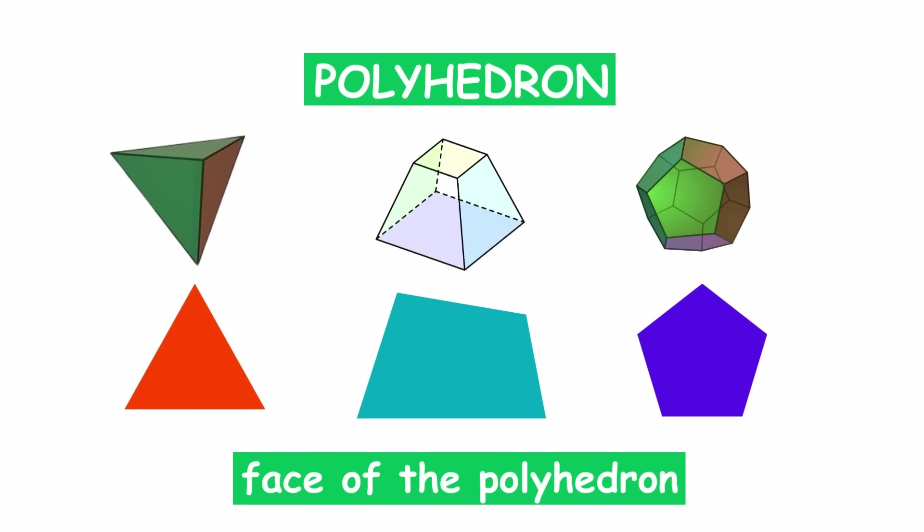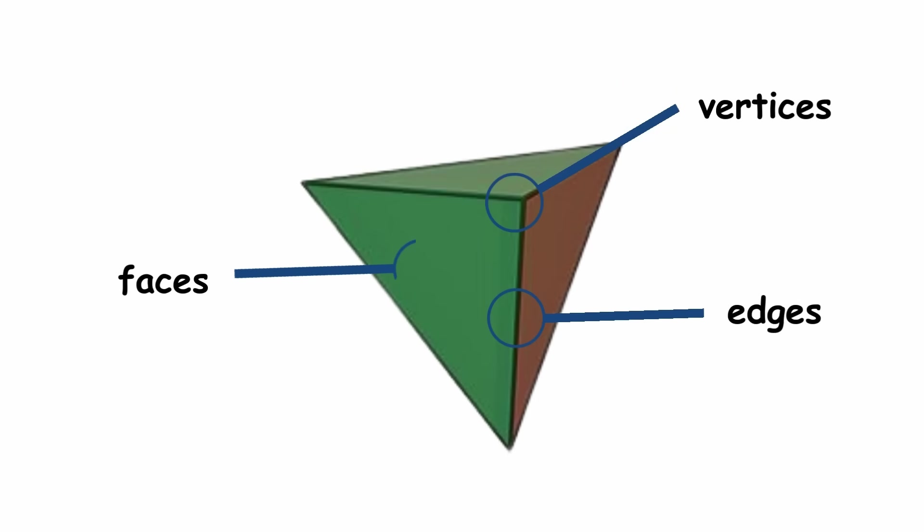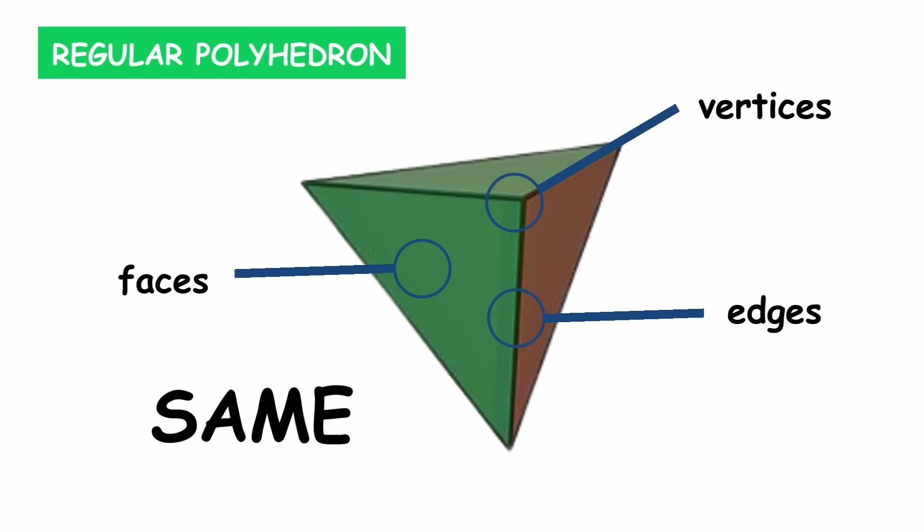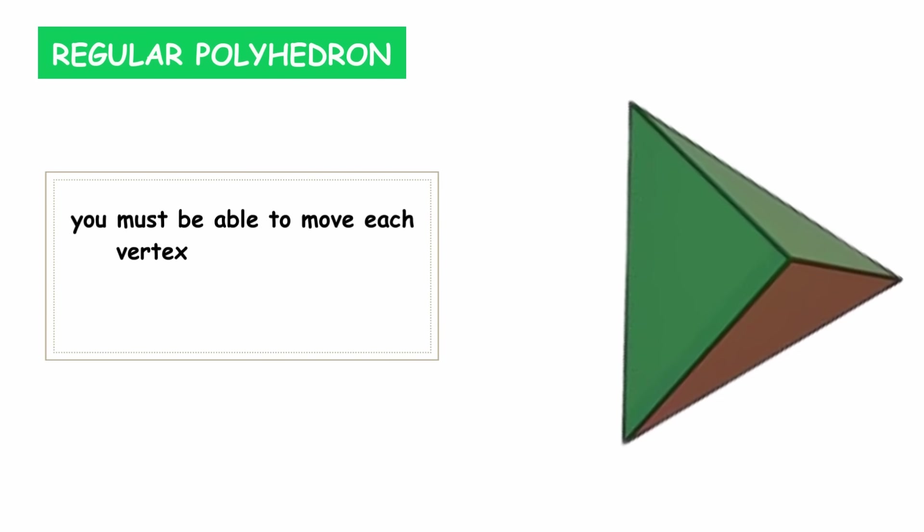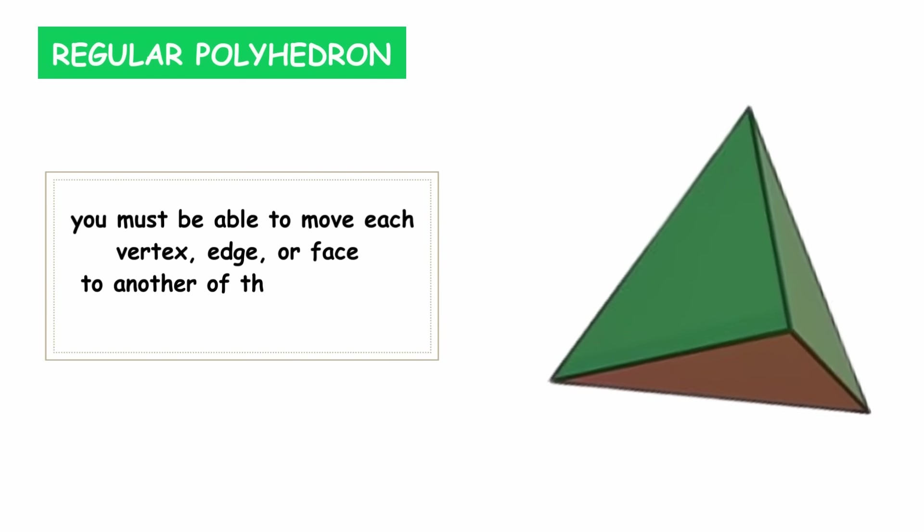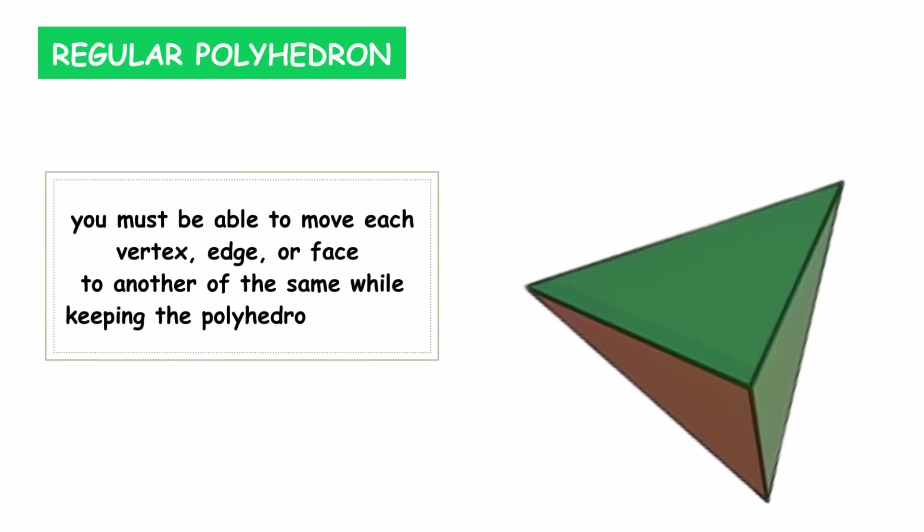If all of the polyhedron's vertices, edges, and faces are the same, it is called a regular polyhedron. More precisely, you must be able to move each vertex, edge, or face to another of the same while keeping the polyhedron identical.